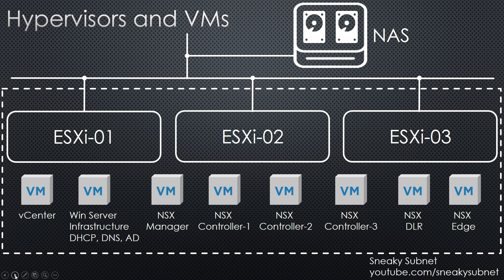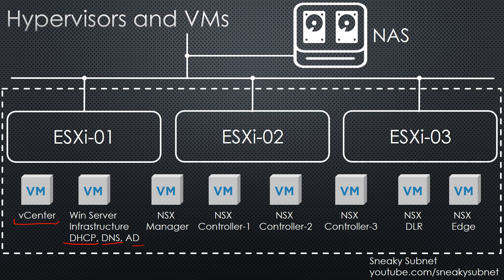Obviously we need a vCenter VM since it is the key element of vSphere. Depending on your setup, you may not need a separate VM for infrastructure services like DNS, DHCP, NTP, or Active Directory, or you may deploy a small Linux-based VM. In my case it is a Windows Server which acts as DHCP, DNS, and Active Directory server. I won't describe the NSX part in detail right now, but in short you need a lot of VMs to build all the necessary planes of NSX.